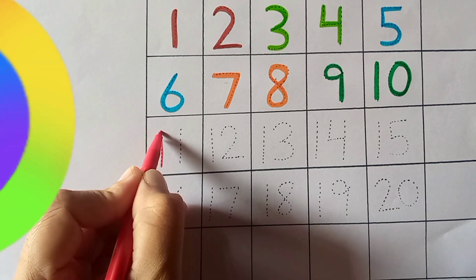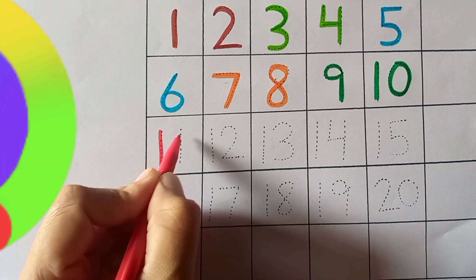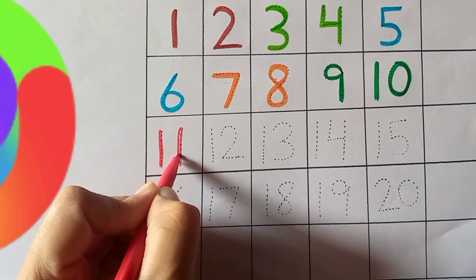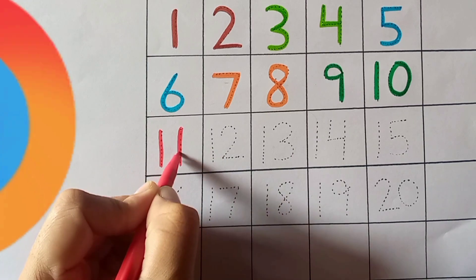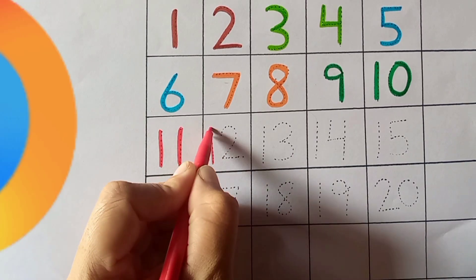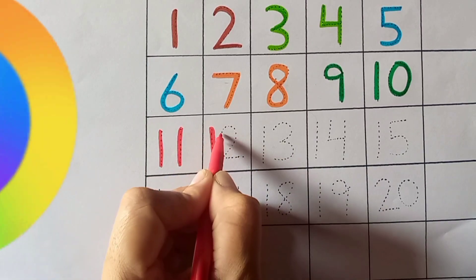Eleven. One one one, eleven. Twelve. One two, twelve.